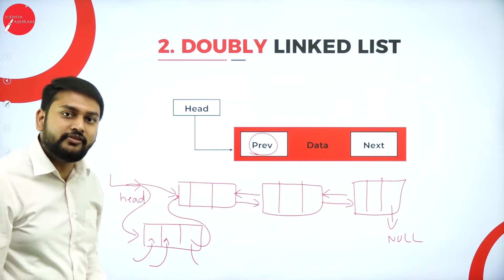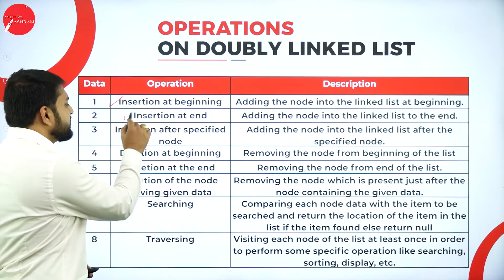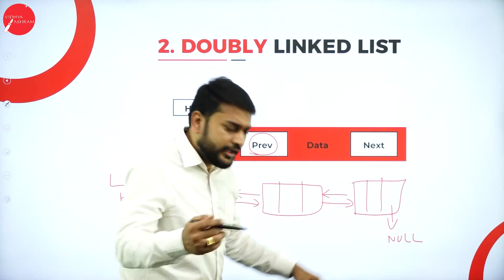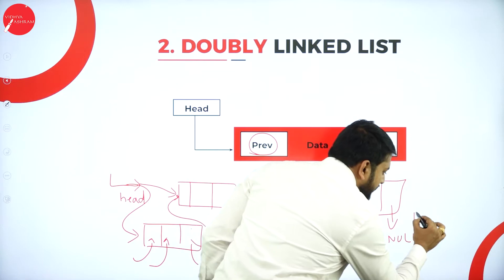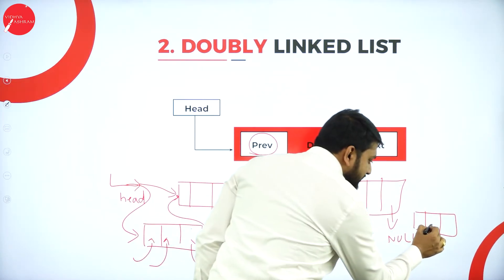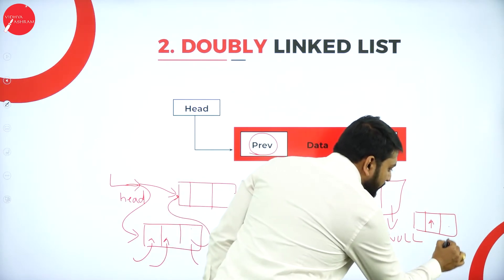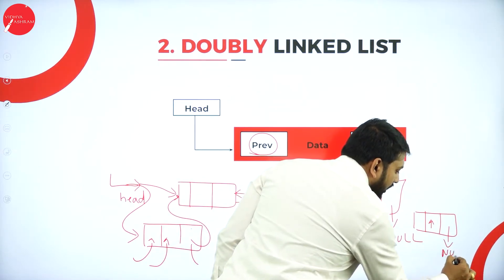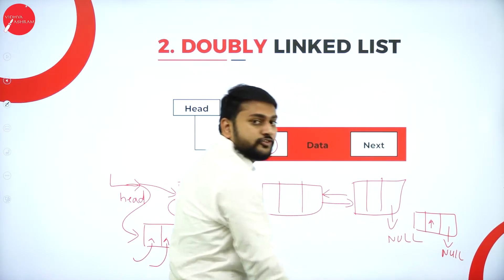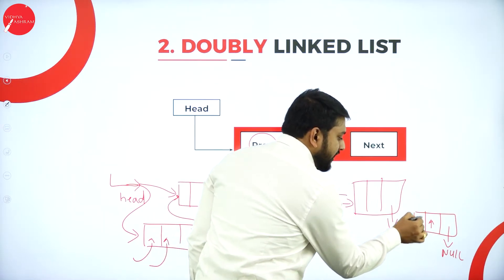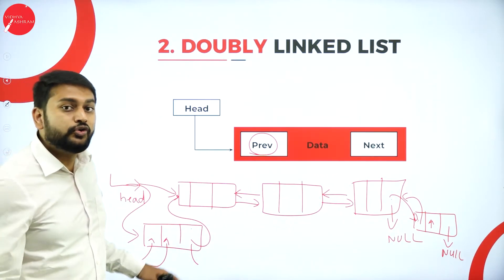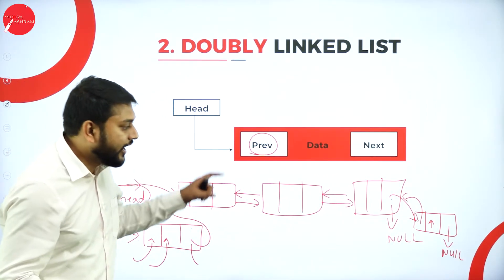The next operation is insertion at the end. First create the node, insert the data, make the next part null, then store the address of the previous last node in the previous part of the new node, and update the next part of the old last node to store the address of the new node.